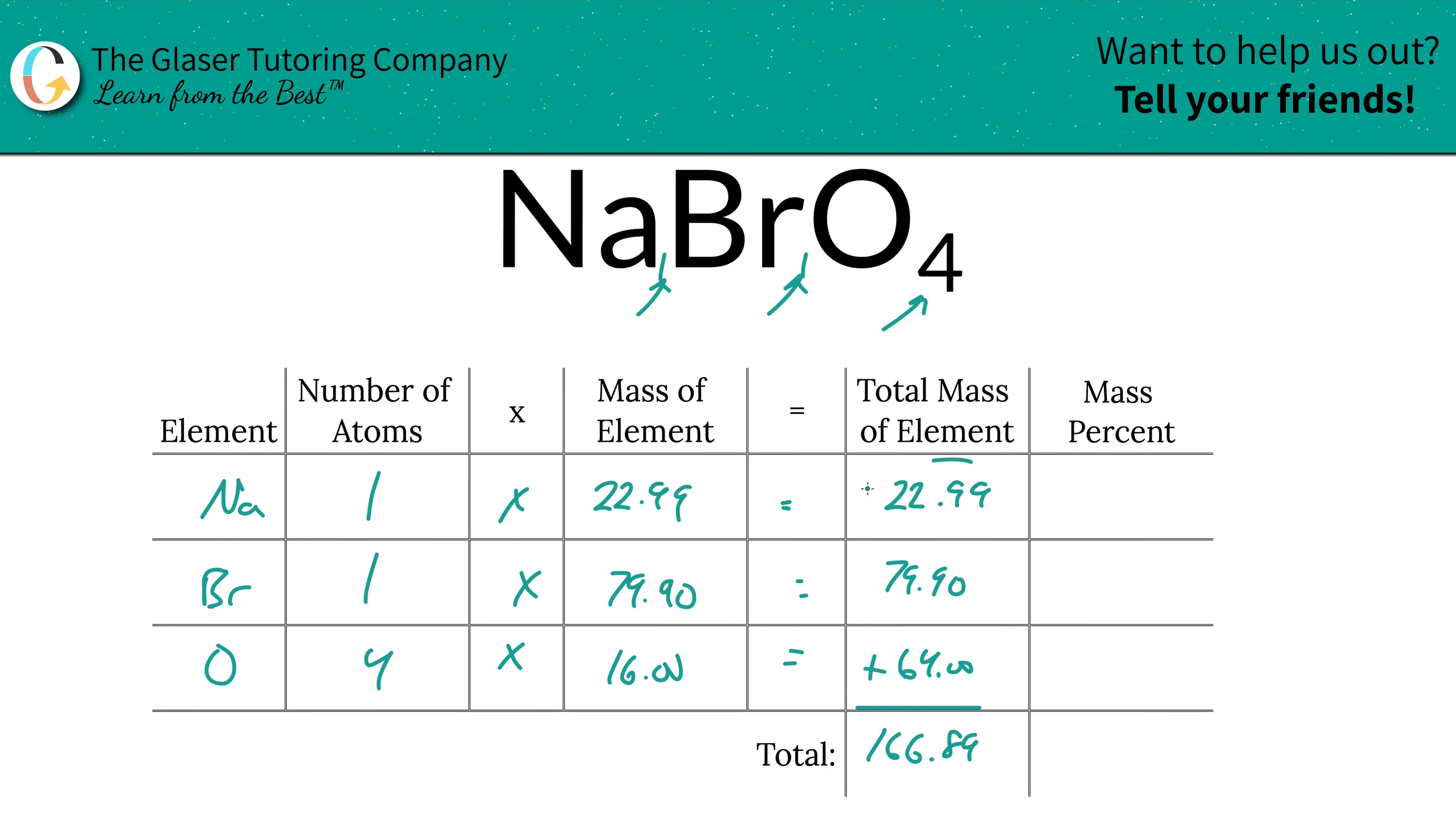So to find a mass percent of, let's say, sodium, we're going to take the total mass of that sodium, 22.99, and divide it by the total mass of the entire compound, 166.89, and multiply that by 100 to get it into percentage terms. That's a simple percent, part over whole times 100. And the percentage here is going to work out to be roughly 13.78%. And that takes care of sodium. We'll do the same process for bromine. Take the total mass of the bromine, 79.9, divided by the total mass of the entire compound, multiply that by 100, and you're going to get 47.88. That's in terms of a percent.